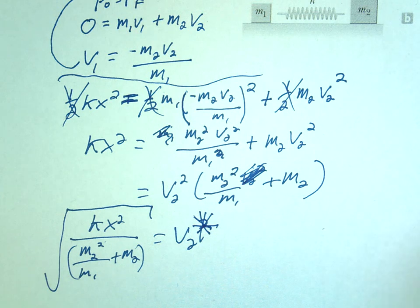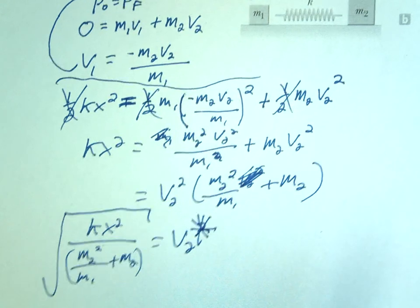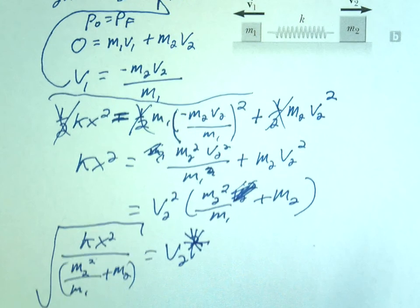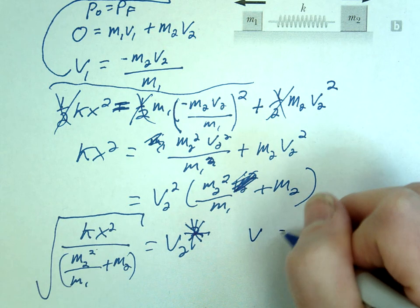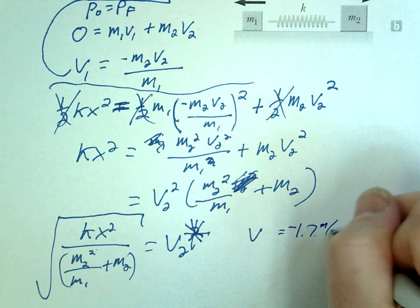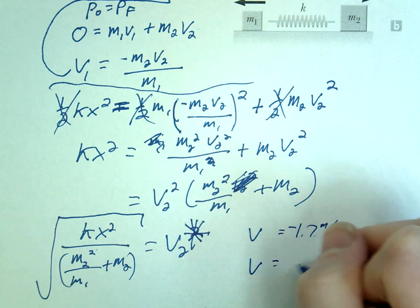Okay? I'm not going to do all the numbers. You guys can plug in the numbers yourselves. The answers are right here. So you should get one V is going to be negative 1.7 and the other V is going to be 1.1.